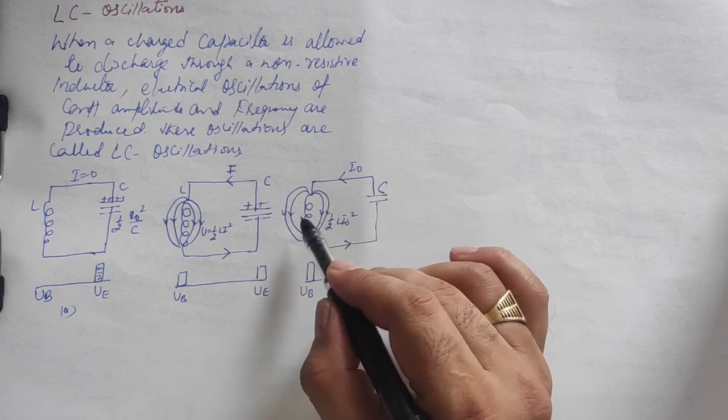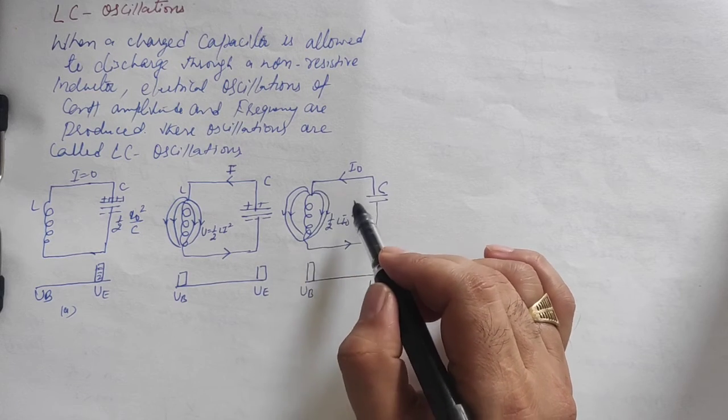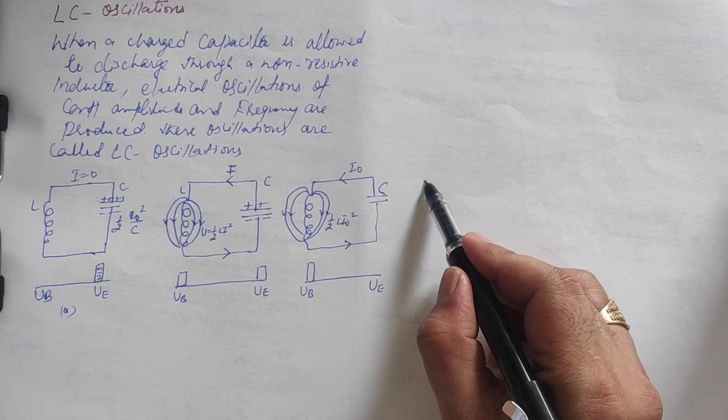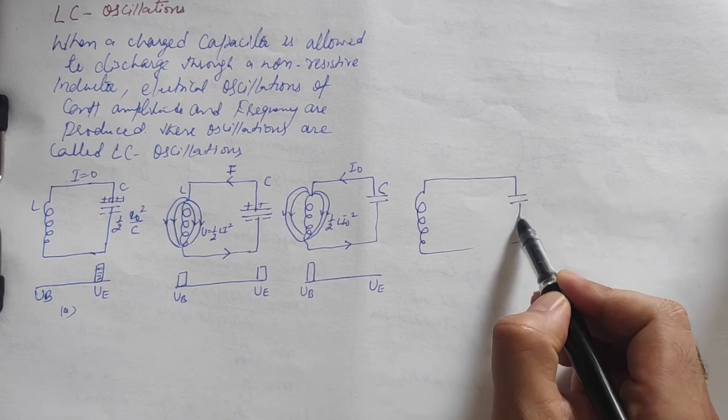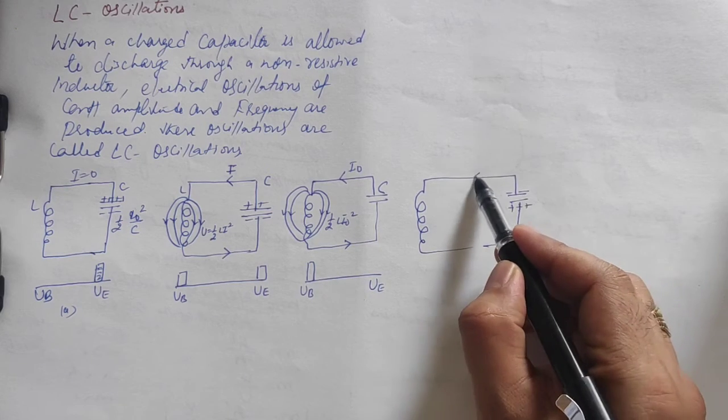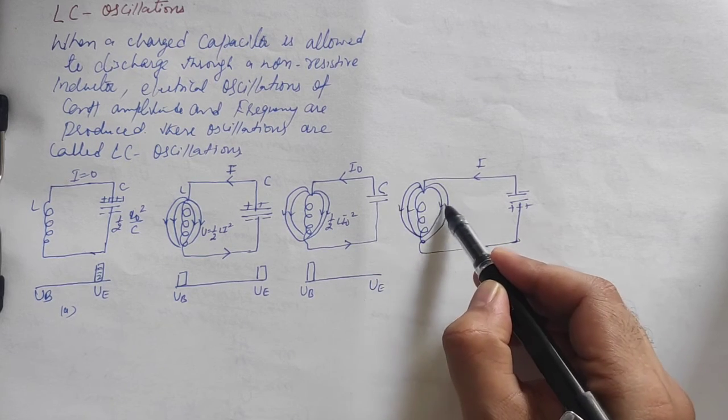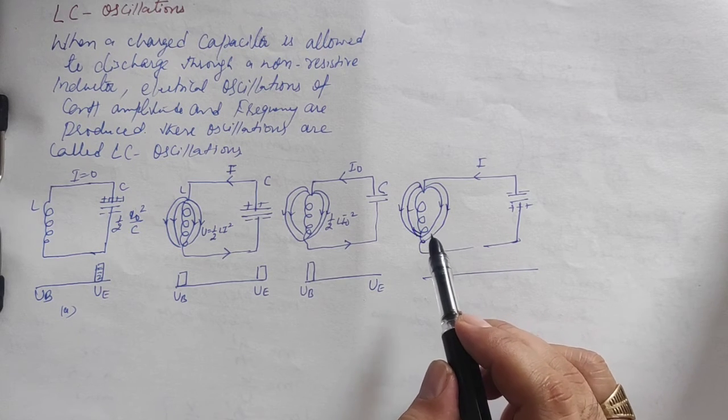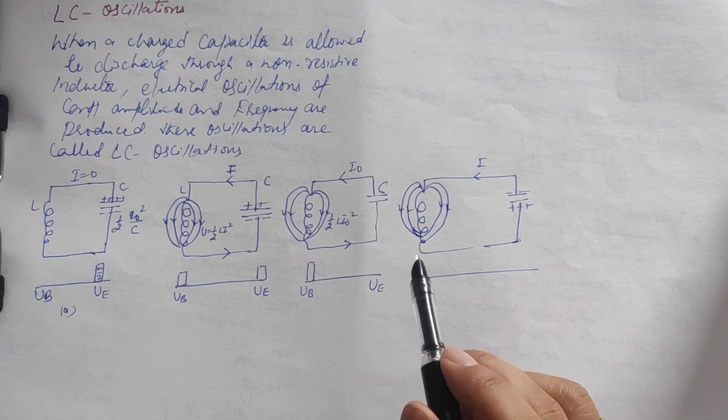After the capacitor discharges completely, the magnetic flux linked with the inductor decreases. According to Lenz's law, current is induced in the same direction. Let me show you another diagram to explain this.